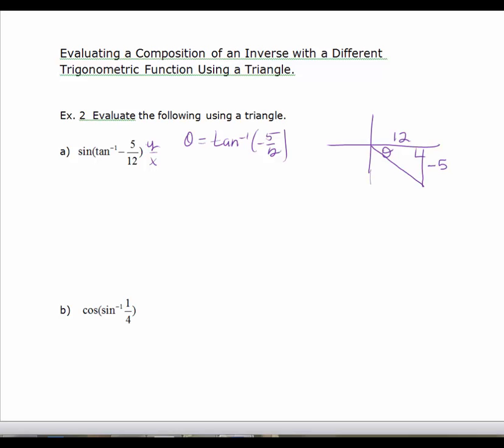So what I want to find is the sine of theta. I know this is theta. And if I want to find the sine of theta, I need to find r. Because I know that the sine of theta is y over r. I already know my y value is negative 5.